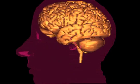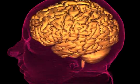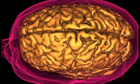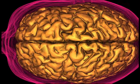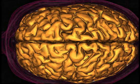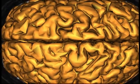The lentiform nucleus is part of the striatum. This is subcortical gray matter which means that we have to dig deep into the brain. Brace yourself and let's go!